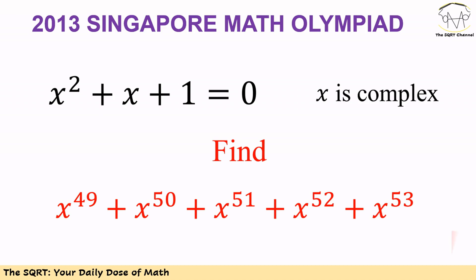Hello everyone. In this video we are going to talk about another problem from the 2013 Singapore Math Olympiad. In this problem we have x² + x + 1 = 0, and we know x is a complex number. We want to find x^49 + x^50 + ... up to x^53. Before moving forward, make sure you pause the video to think about the problem.